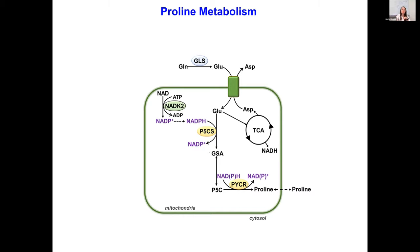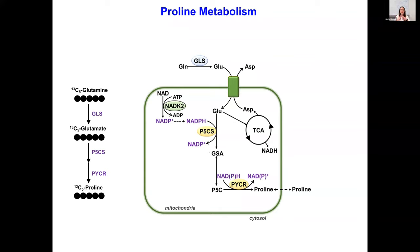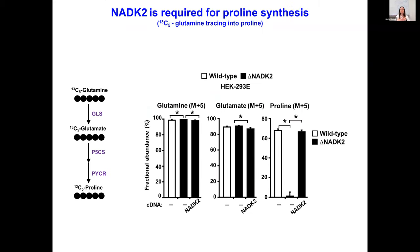We decided to test this empirically by labeling cells with heavy-labeled glutamine labeled at five positions (N+5). Glutamine conversion into glutamate, then through P5CS and PYCR1 into proline, retains all carbons, so newly synthesized proline will have a mass of N+5 detectable by mass spectrometry. In an isogenic HEK-293 system with wild type cells, NADK2 knockout, and NADK2 add-back, we performed glutamine tracing for three hours. We observed about 60% fractional enrichment of proline in wild type cells, while in knockout cells we see essentially no newly synthesized proline, completely restored when we give back NADK2.